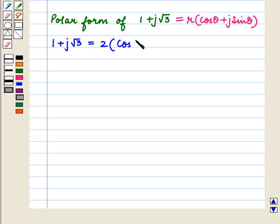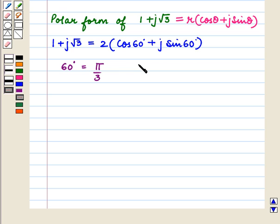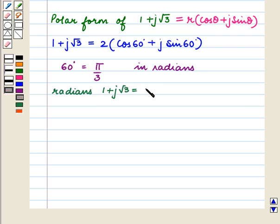So the polar form of 1 plus J root 3 equals 2 times (cos 60° plus J sin 60°). Since 60 degrees equals π over 3 radians, writing the angle in radians gives 1 plus J root 3 equals 2 times (cos π/3 plus J sin π/3).